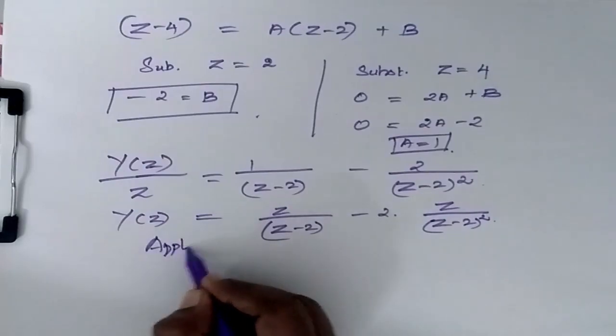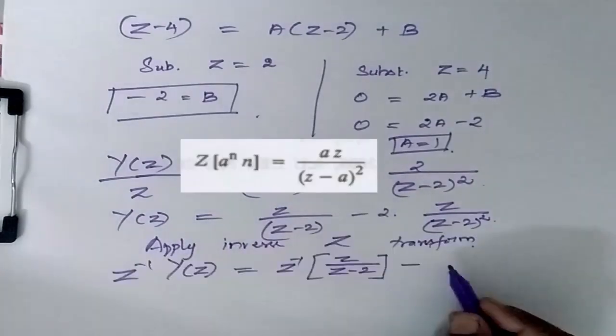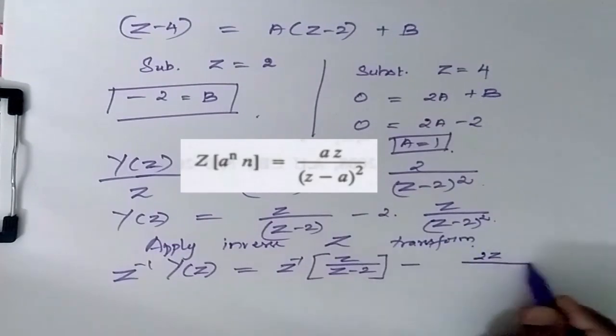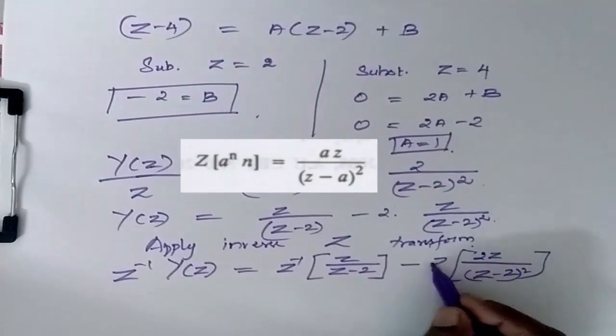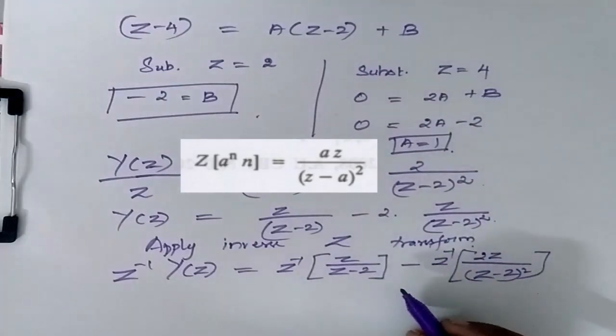Apply inverse Z transform. I will have this 2. I will have this 2Z inside. So that formula will be easier.